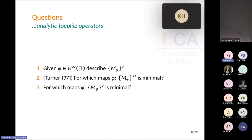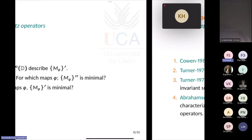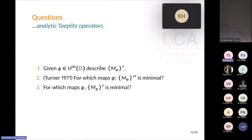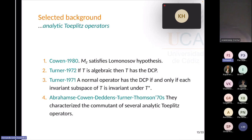For today, we will fully solve question three — the minimal commutant property — and question two — the double commutant property — for univalent maps, for inner functions, and for elements in the Thompson-Cohen class. Let me now select some background on the topic.